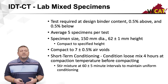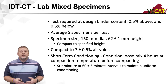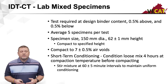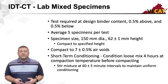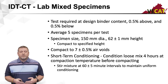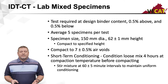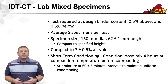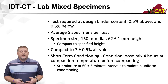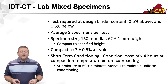When it comes to aging — what we call short-term conditioning — you condition this loose mix for four hours at compaction temperature before compacting. It's important during this four hours of conditioning that you stir the mix at 60-minute intervals.